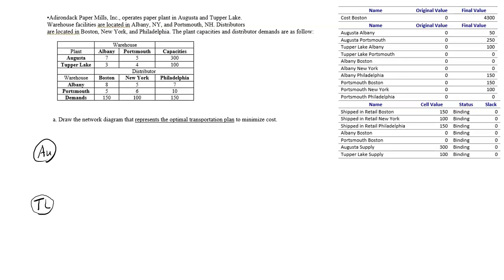These are the two places of origin. Augusta to Albany - there are two warehouses in between which is Albany and then Portsmouth. Then there are three destinations which is Boston, New York, Philadelphia.